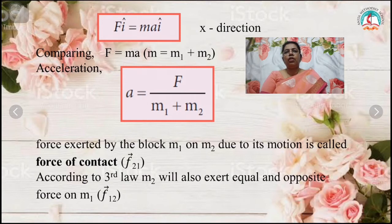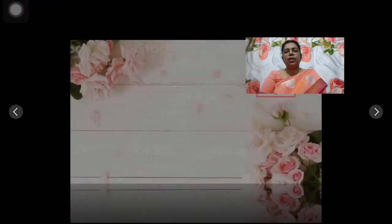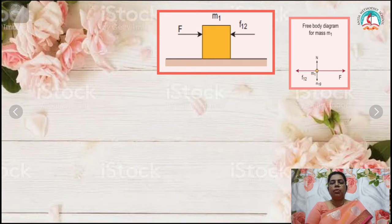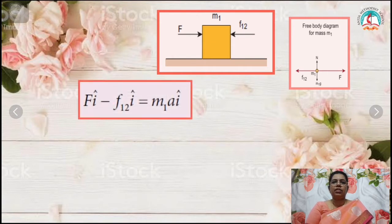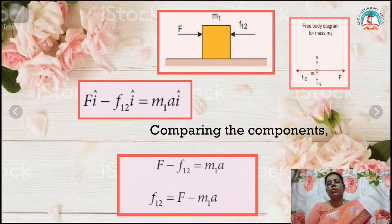Block M1 exerts a force on M2, and M2 exerts a force on M1 — this is called the force of contact. According to Newton's third law, block M2 will exert an equal and opposite reaction force F12 on M1. From the free body diagram, F is the greater force acting in the positive x direction, and F12 is the force by block M2 acting along the negative x direction. So we write F i-cap minus F12 i-cap equals M1A i-cap. Comparing components: F minus F12 equals M1A, or F12 equals F minus M1A.